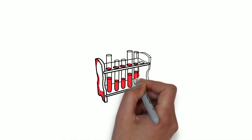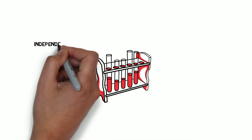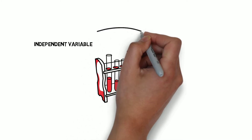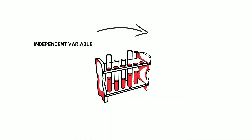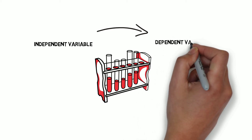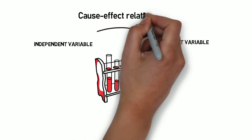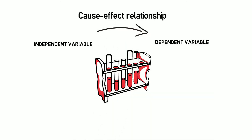Let's say you are a researcher doing a study where you are manipulating an independent variable and measuring the impact of that manipulation on a dependent variable. You get your results and claim that this is the impact of the independent variable on the dependent variable — essentially trying to establish a cause-and-effect relationship between these two variables.